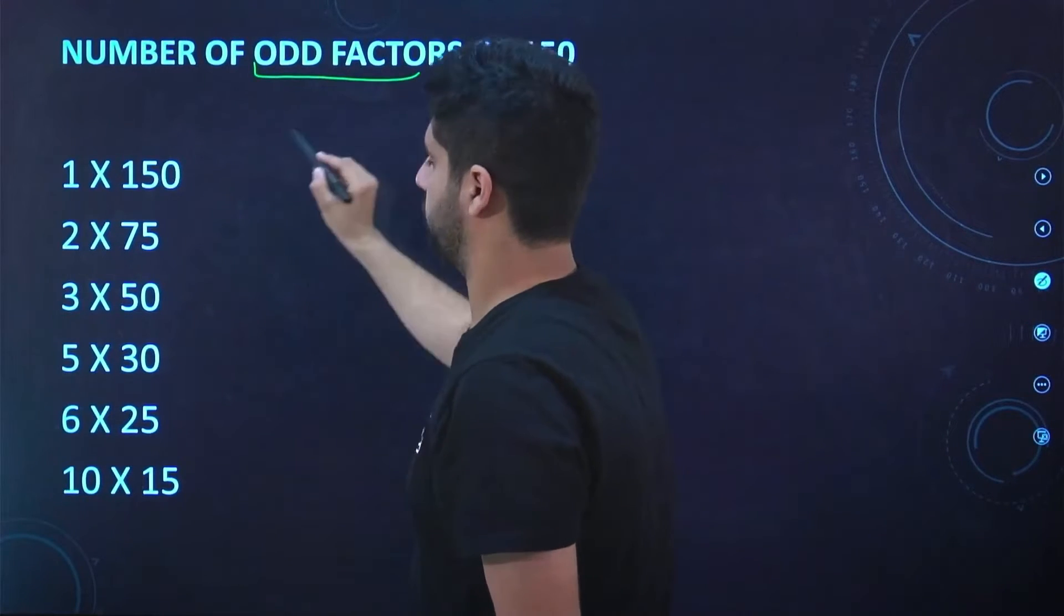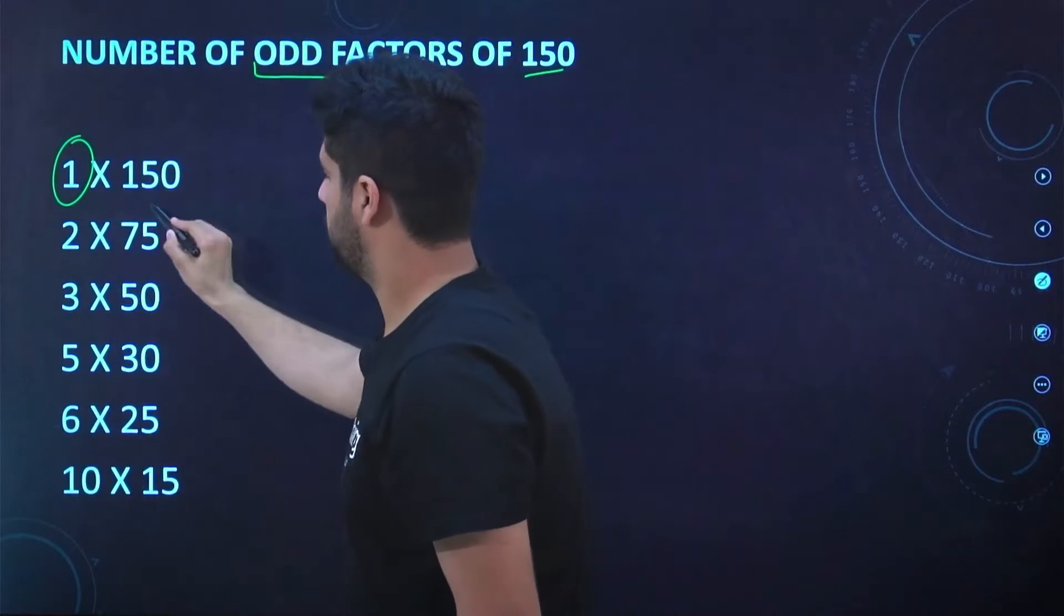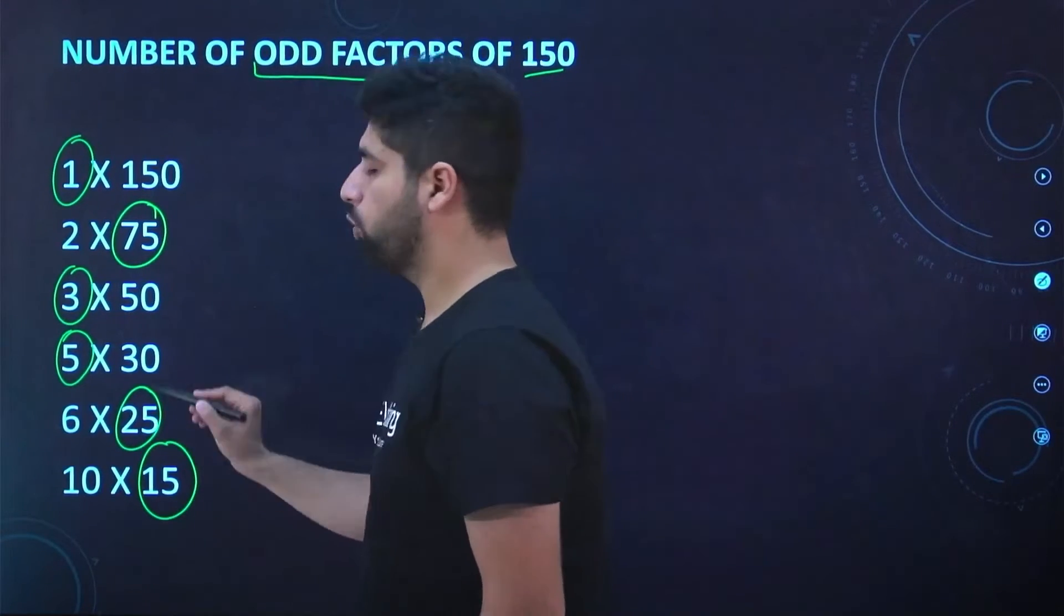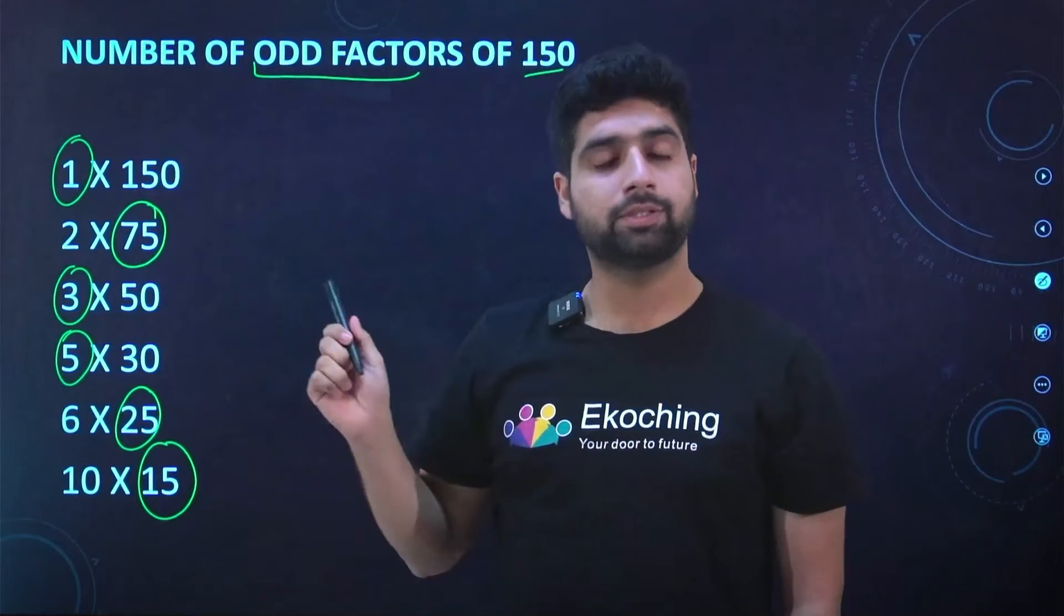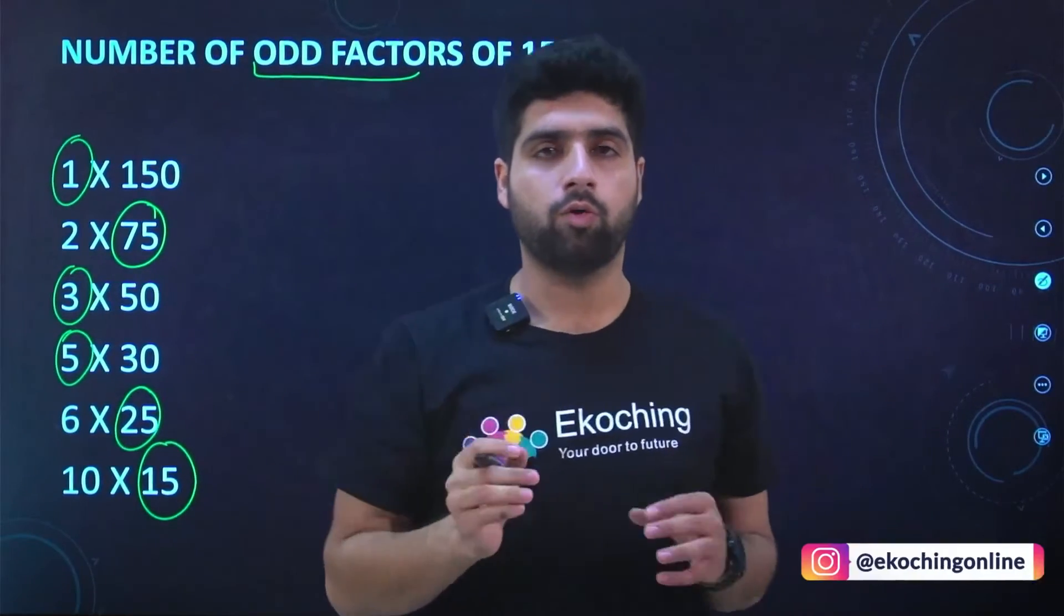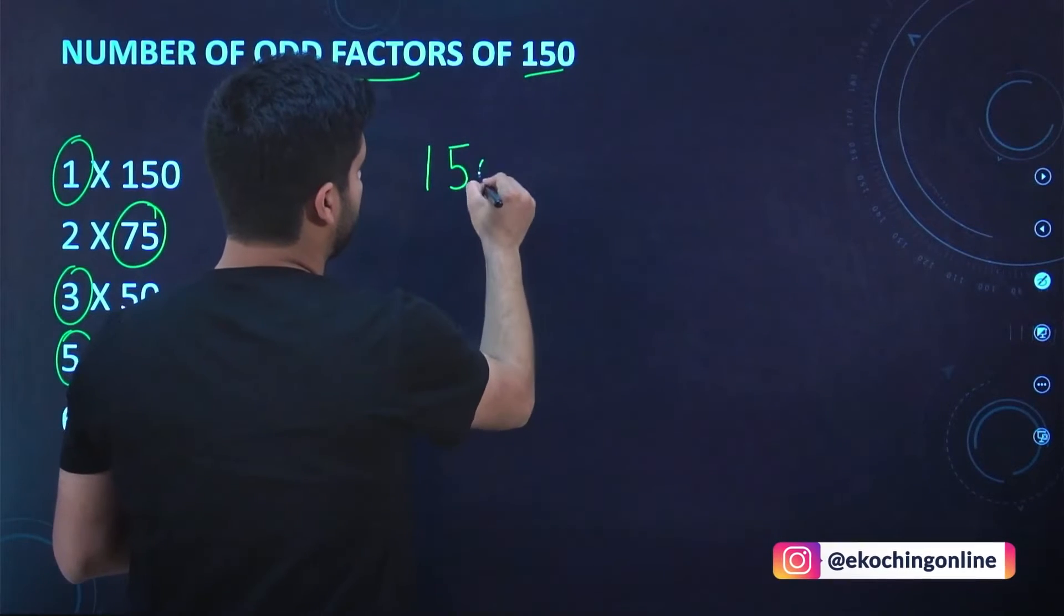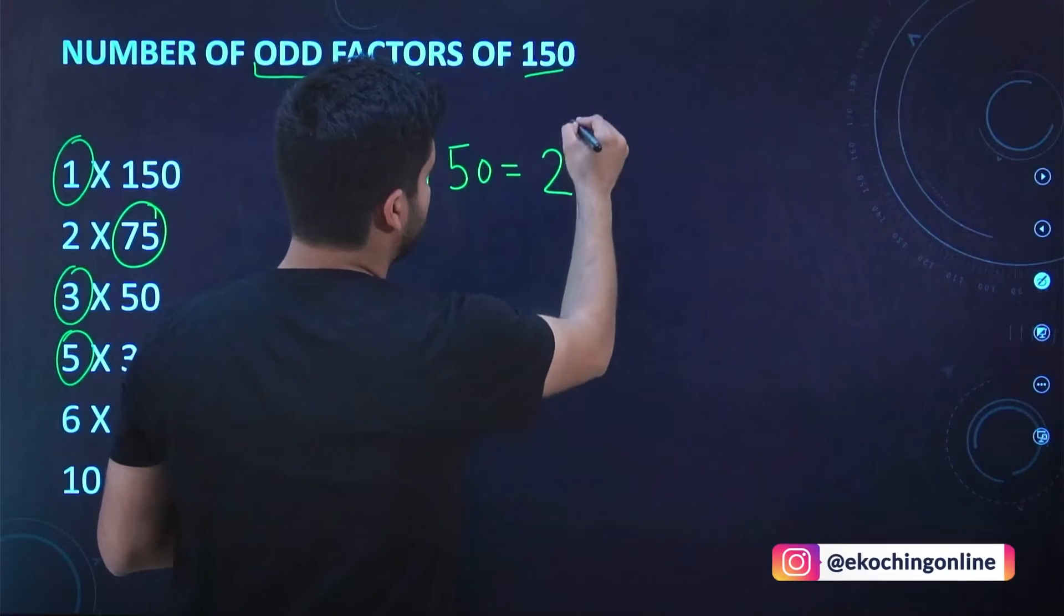find odd factors, which are 1, 2, 3, 4, 5, 6. So we have six factors here, but this will waste our time. Now we can do it in a smart way. See how. Just write 150 into its prime factorization form.